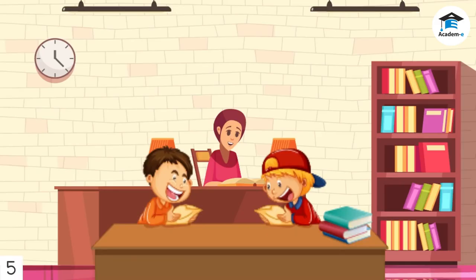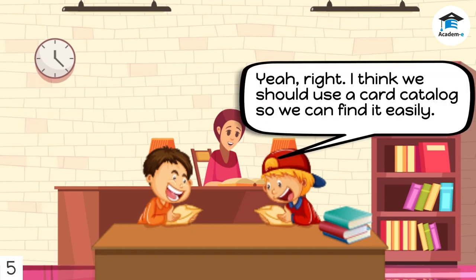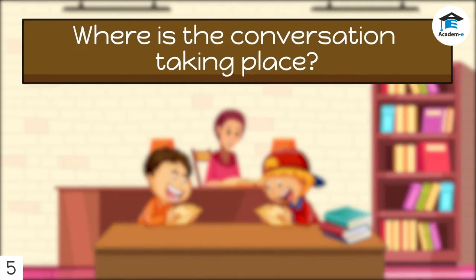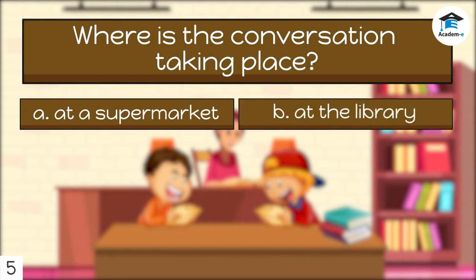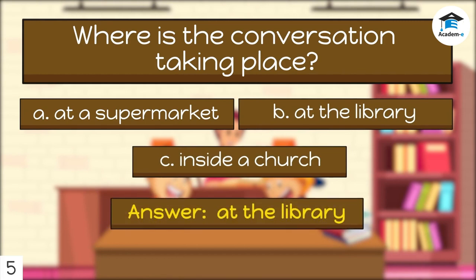Here are some more examples. Let's read each situation and, based on the dialogue, answer the succeeding question. 'We have to find a book for our report.' 'Yeah, right. I think we should use a card catalog so we can find it easily.' 'Silence, please.' Where is the conversation taking place? A. At a supermarket. B. At the library. C. Inside a church. Answer: At the library.